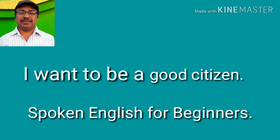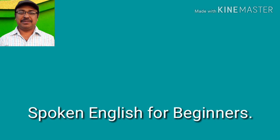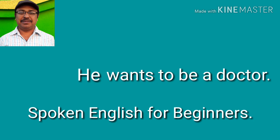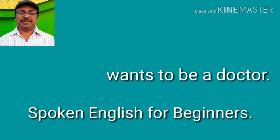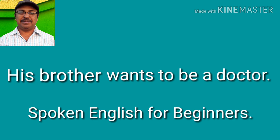What are we doing? We are changing the object of the sentence. Similarly, you can change the subject of the sentence. Just like that: 'He wants to be a doctor. She wants to be a doctor. My friend wants to be a doctor. His brother wants to be a doctor.' Just like that.